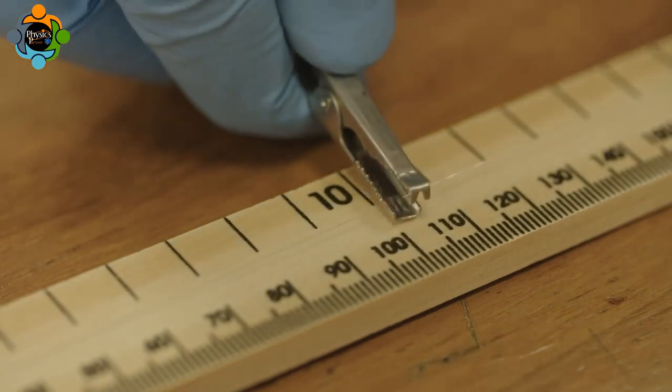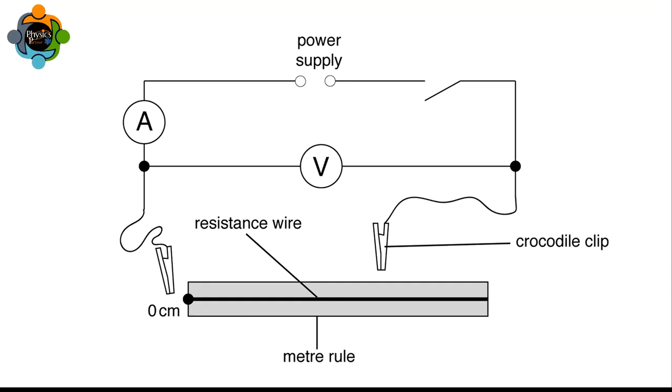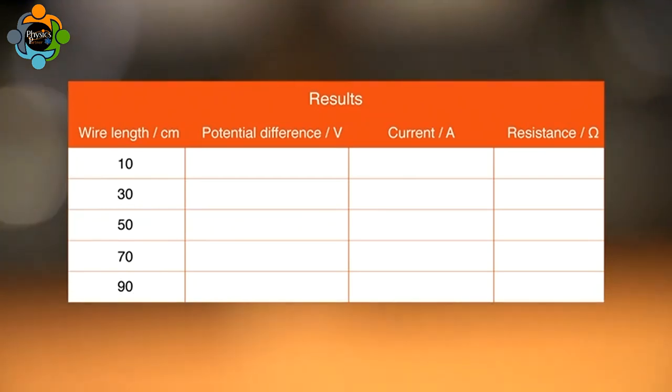The final connection in the circuit is made by attaching the second crocodile clip to the wire at the 10 centimeter mark. By doing this, the wire in the circuit is effectively 10 centimeters long. Before the circuit is switched on, check carefully that it is set up as shown in the diagram. Make sure a results table is ready to record the data.